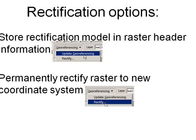Once you have a satisfactory model with enough links scattered throughout the image, you have two options. One is to go to the georeferencing toolbar and choose Update Georeferencing, which stores the georeferencing model in a raster world file or header, so every time you use that raster in ArcMap it displays correctly. Or you can permanently rectify your raster by choosing Georeferencing and then Rectify, which outputs a totally new raster in the target coordinate system.